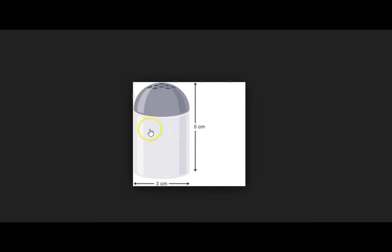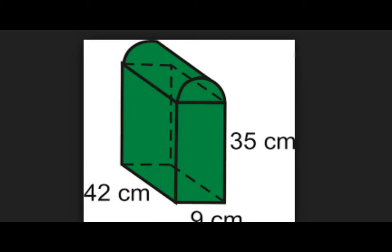A salt shaker, right? It's got a cylinder with half a sphere on top. Here's another one. Semi-circle, right? It's got half of a cylinder and a rectangular prism right on top.